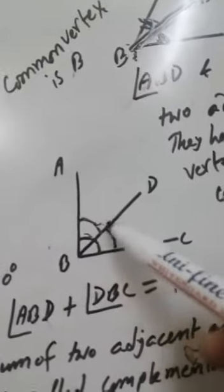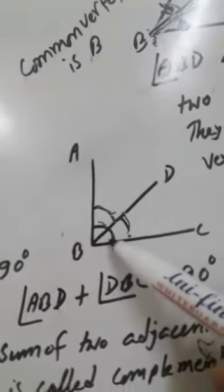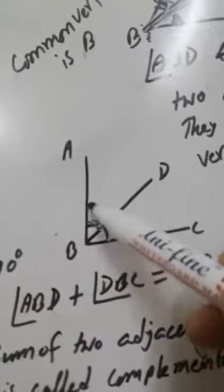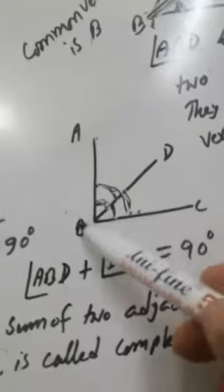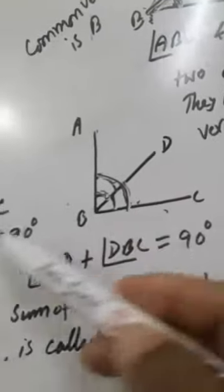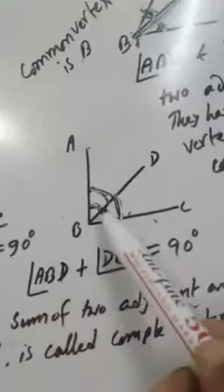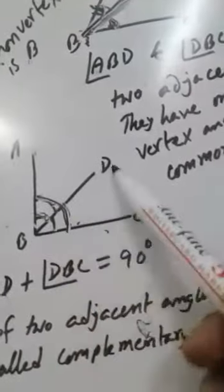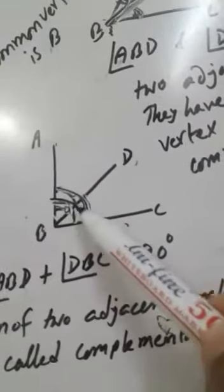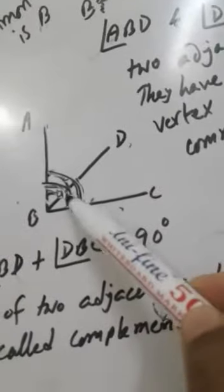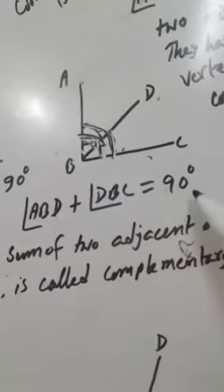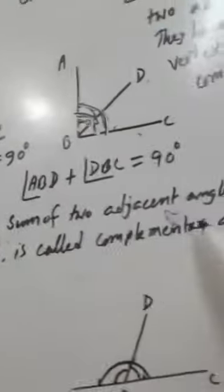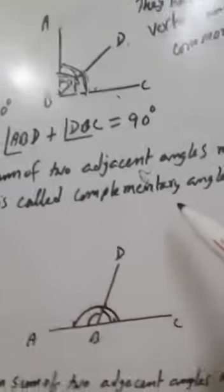Here are also two adjacent angles, and the sum of these two angles is 90 degrees. Angle ABC equals 90 degrees. The two angles are ABD and DBC. When the sum of two adjacent angles measures 90 degrees, they are called complementary angles.